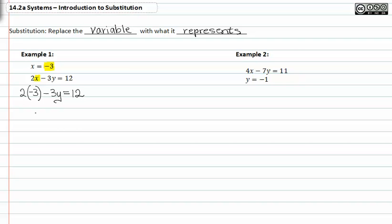Now simply solve for y. We're going to add six to both sides. This gives us negative three y is equal to eighteen.